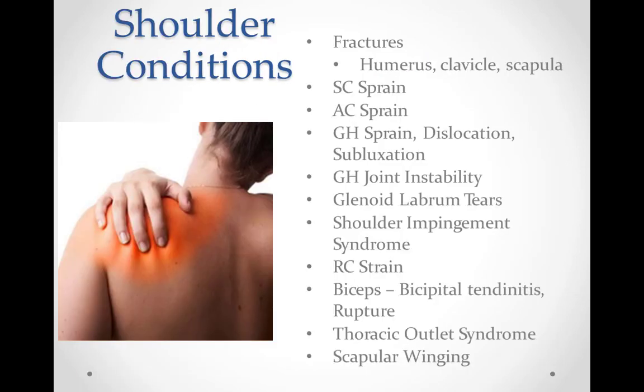Shoulder conditions to be discussed include fractures of the humerus, clavicle, and scapula; sternoclavicular joint sprains; acromioclavicular joint sprains; glenohumeral joint sprains; dislocations and subluxations; glenohumeral joint instability; glenoid labrum tears; shoulder impingement syndrome; rotator cuff strain; biceps, which includes bicipital tendonitis and rupture; thoracic outlet syndrome; and scapular winging.